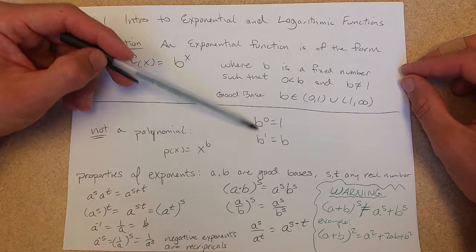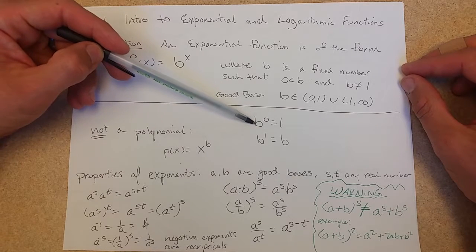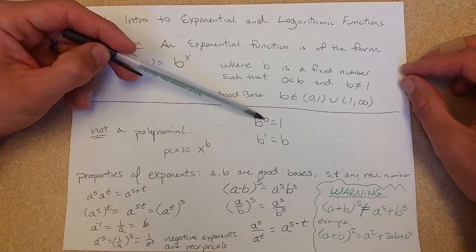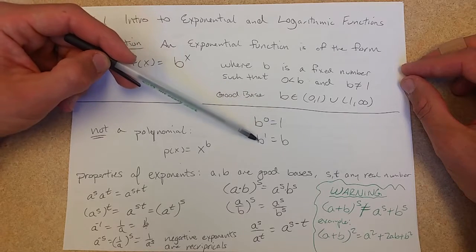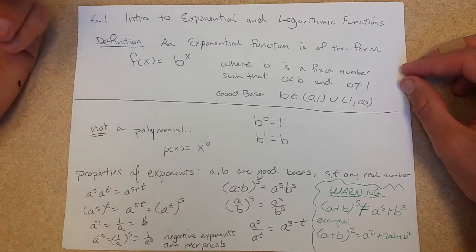Here's the first two properties of exponents. Any good base to the 0 power is 1. Any good base to the first power is itself.